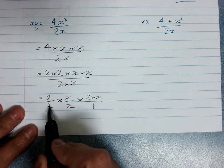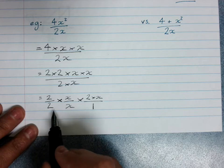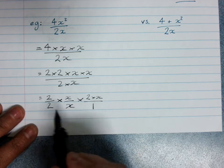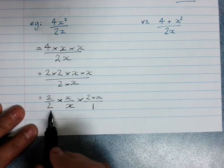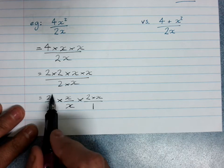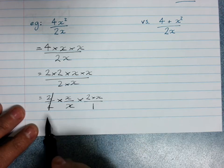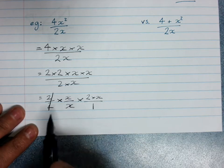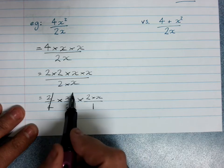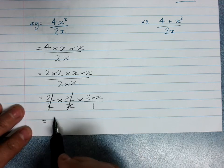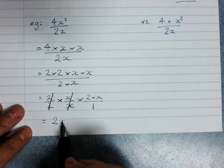Now, 2 over 2, 2 divided by 2 is 1, and 1 times anything doesn't change it. 1 times 10 is 10. So this times 1 can be got rid of without changing the meaning of the fraction. And so all I've got left is 2 times x, which is 2x.